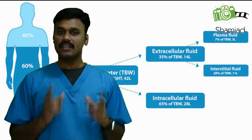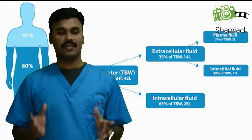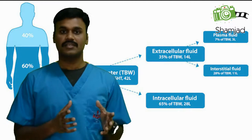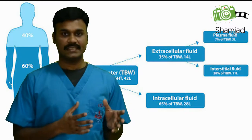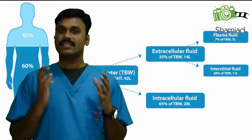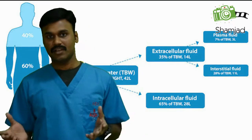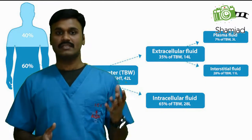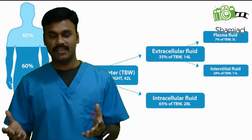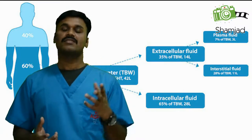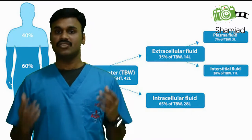Let's see how water is distributed in our body. Fluids within our body are contained in different compartments like intracellular and extracellular. Intracellular means fluids within the cells and extracellular means fluid outside the cells. These extracellular fluids are again divided into compartments like interstitial fluid in the tissue spaces, intravascular fluids within the vessels, and transcellular like CSF and joint fluids.